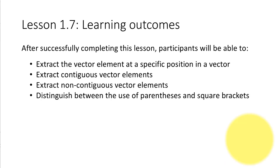We'll learn how to extract the vector element at a given position, extract contiguous vector elements — that is, elements which are close to each other — and extract non-contiguous vector elements. We'll also distinguish between the use of parentheses and square brackets. When subsetting vectors we'll be using square brackets, but we've already seen parentheses used for functions, and I want to make sure you are aware of this distinction and don't make the mistake that people generally make.